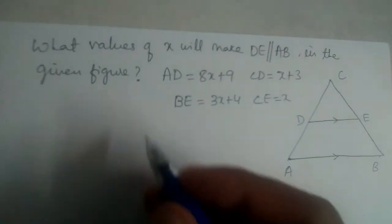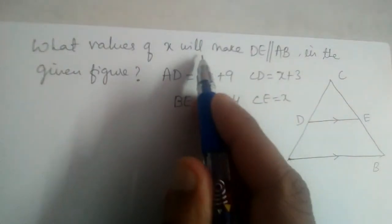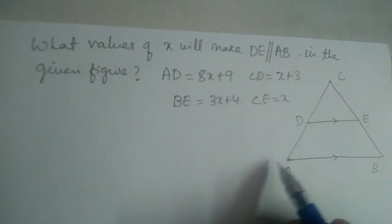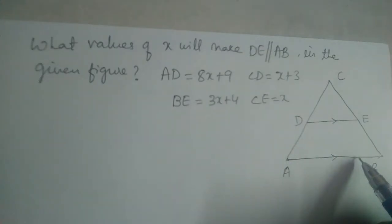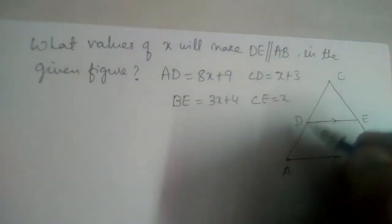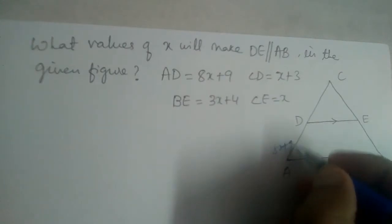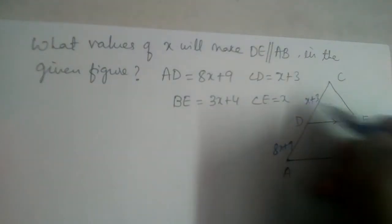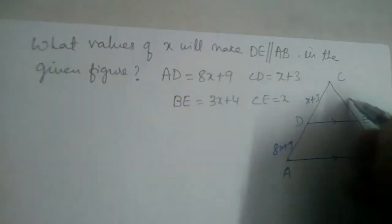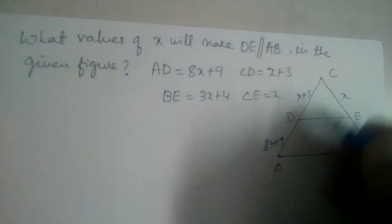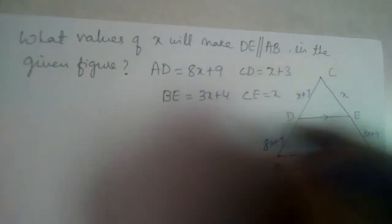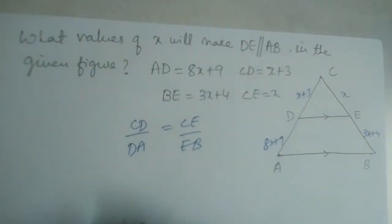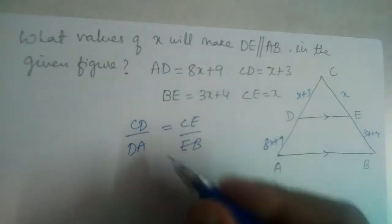We have a problem: what value of x will make DE parallel to AB in the given figure? DE should be parallel to AB. AD is 8x + 9, DB is 3x + 4, CD is x + 3, and CE is x. So that means CD divided by DA should be equal to CE divided by EB. Let us substitute these values and find the value of x.